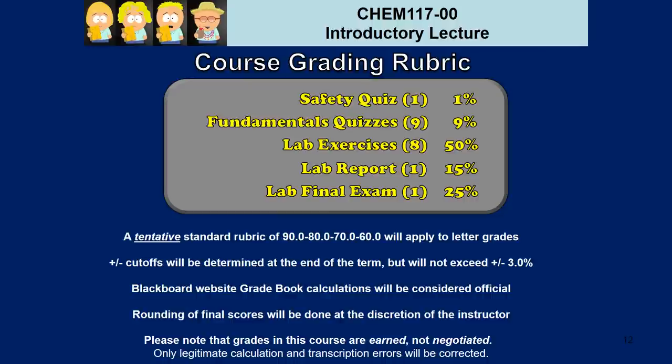Keep in mind that the Blackboard website gradebook calculations will be considered official — those are the numbers I will use to determine your final grade, so be sure that you keep track and make sure your TA has made all entries correctly. Rounding of final scores is done at my discretion at the end of the term. Please note that grades in this course are earned, not negotiated. I will only entertain legitimate calculation and transcription errors with regard to grades.